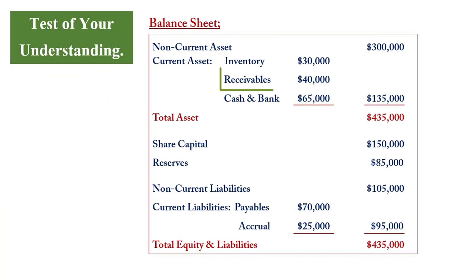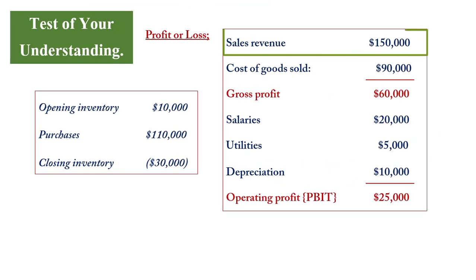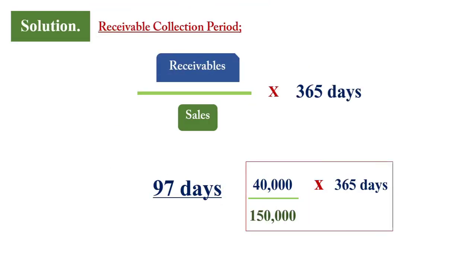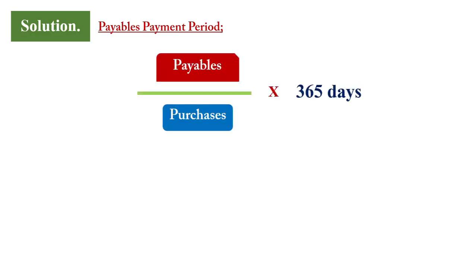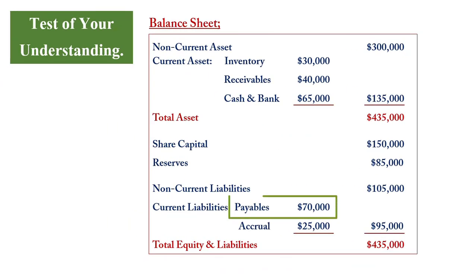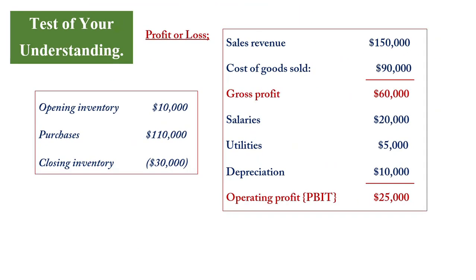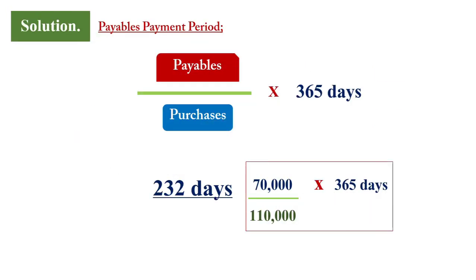Moving to the payables payment period: the formula is payables divided by purchases, multiplied by 365 days. Working this out gives 262 days, calculated as payables of $70,000 divided by purchases of $110,000, multiplied by 365 days.